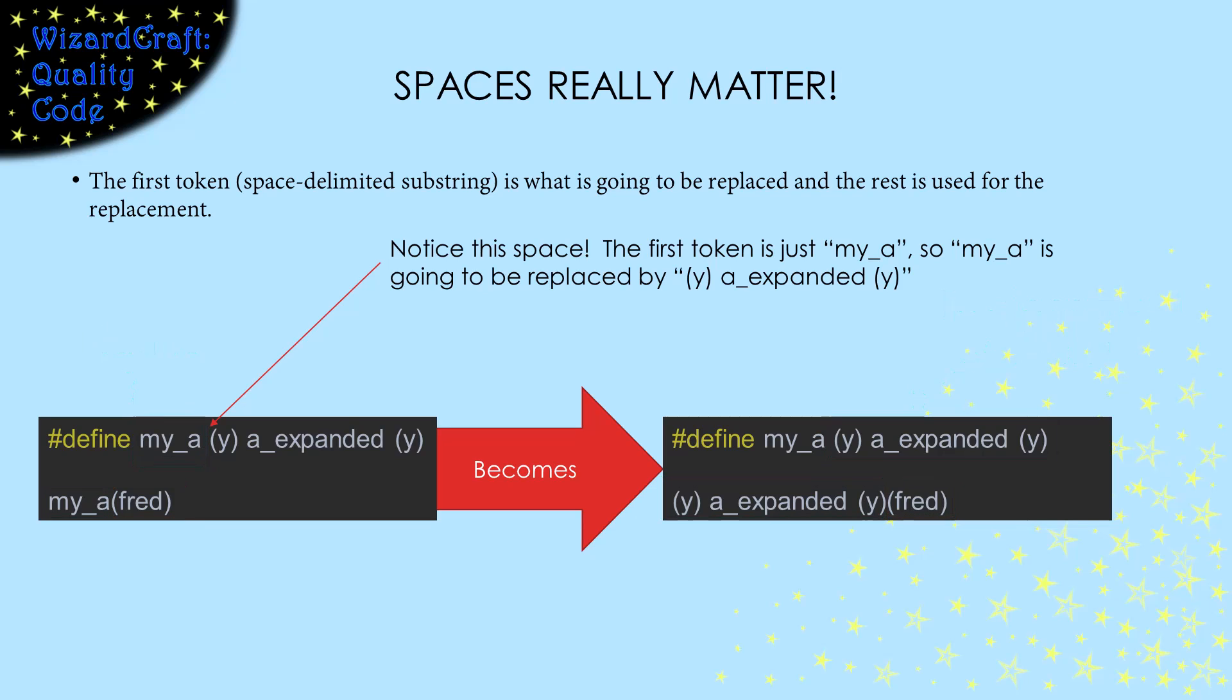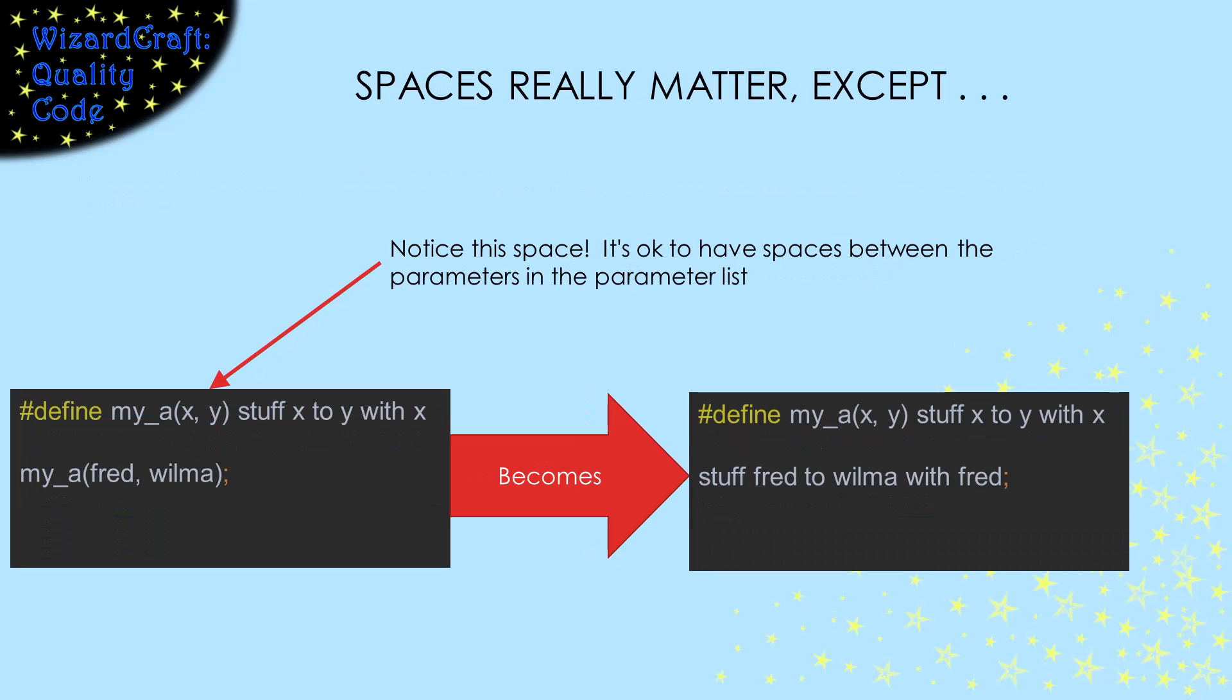When you use these more complicated pound-defines, if you make a mistake, you often get really weird syntax errors. Since you never see the code that the preprocessor makes, it's hard to notice that the problem is being called by a bug in the pound-define. However, there is one exception to the spaces rule that we talked about on the prior slide. You are allowed to have spaces between the parameters in the pound-defines parameter list. So, not between the pound-defines name and the parameter list, but within the parameter list is okay.